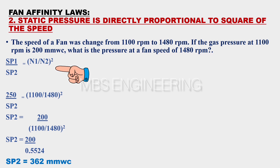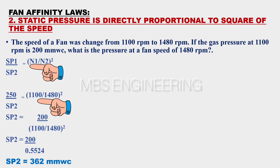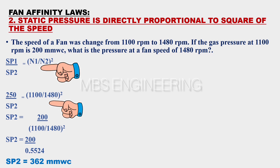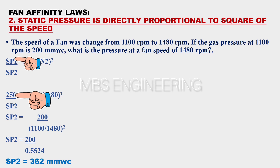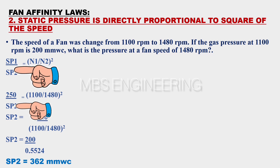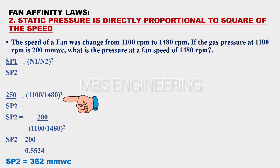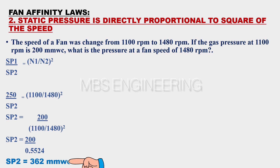The given data are: speed N1 is 1100 RPM, speed N2 is 1480 RPM, and static pressure SP1 is 250 millimeters water column. We need to calculate the static pressure SP2. Then 250 divided by SP2 equals the square of 1100 divided by 1480. Please refer to the below step-by-step calculations. Based on the above equation and given data, the obtained static pressure SP2 at a speed of 1480 RPM is equal to 362 millimeters water column.